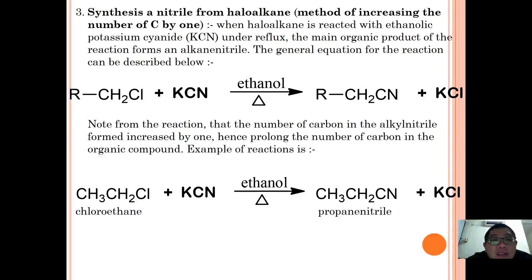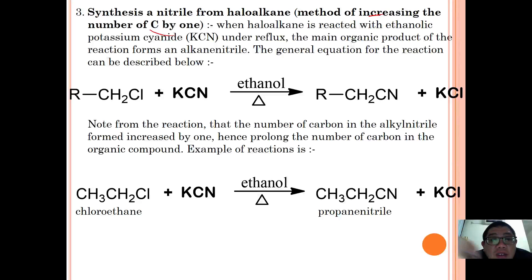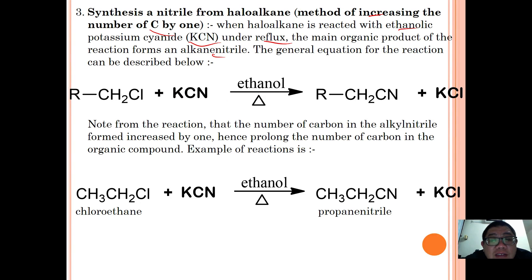The third reaction involving haloalkanes is the synthesis of nitrile. This is a method to increase the number of carbons by one. When a haloalkane is treated with ethanolic potassium cyanide under reflux, the main organic product formed is an alkyl nitrile. The general equation: RCH2Cl plus KCN in ethanol under reflux forms RCH2CN plus KCl.